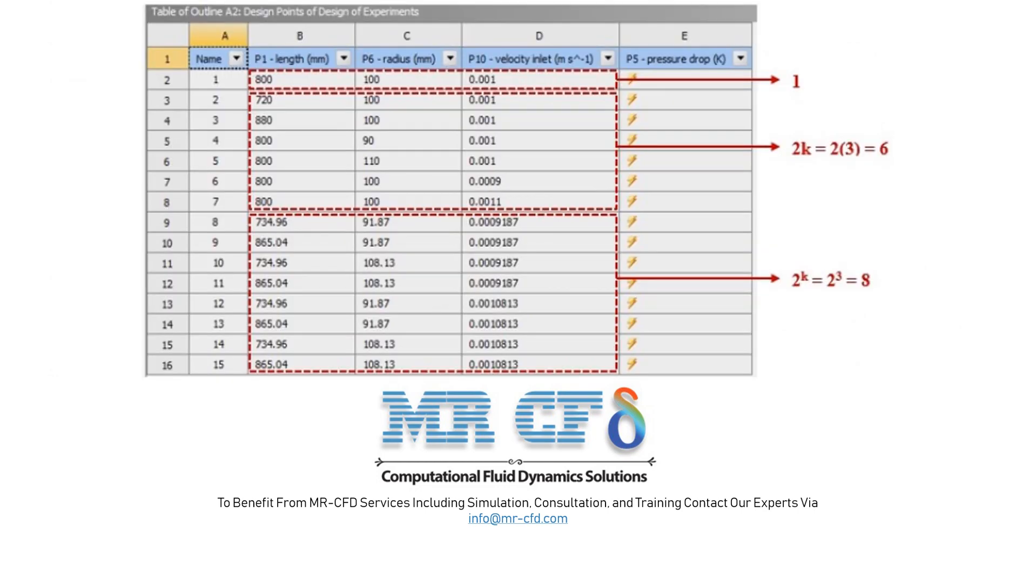For example, suppose there are three input parameters or variables including length, radius, and velocity inlet as design points, and the effect of their changes on the output parameter or the pressure drop and the CCD model is used. This figure shows the table of design points for each input parameter.